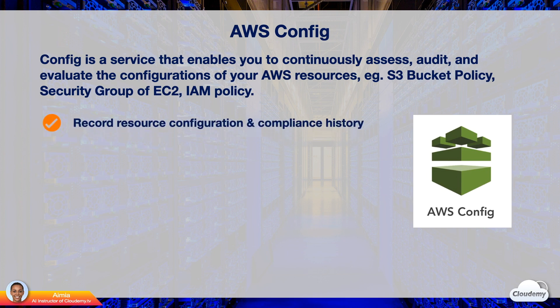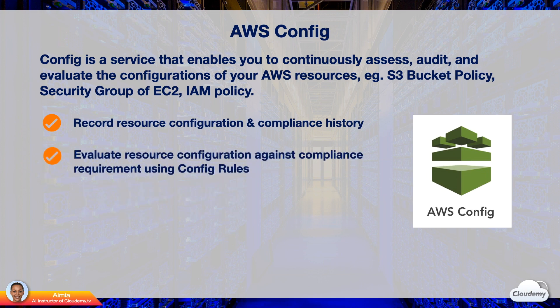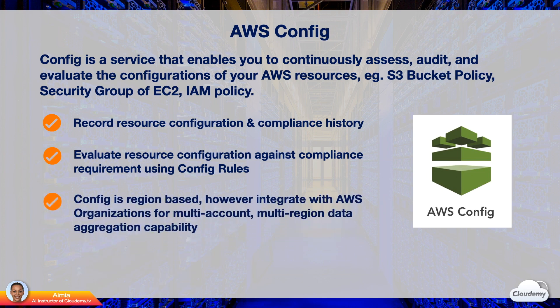AWS Config records AWS resource configuration and compliance history and provides a timeline view of configuration details. It lets you create config rules based on compliance requirements and continuously evaluate resource configuration and compliance status. AWS Config is a region-based service, and each region has a different AWS Config dashboard where you can view the configuration timeline of resources in that region.